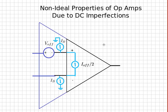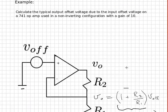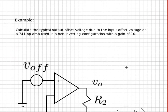Let's do an example problem. So here's an example problem. It says calculate the typical output offset voltage due to the input offset voltage on a 741 op-amp used in a non-inverting configuration with a gain of 10.